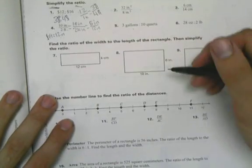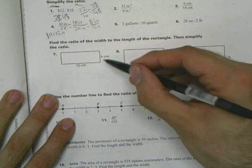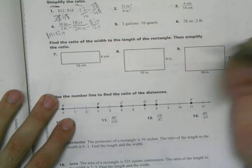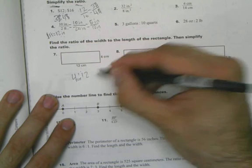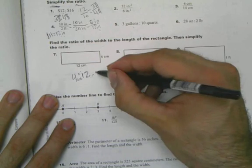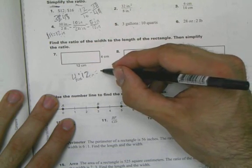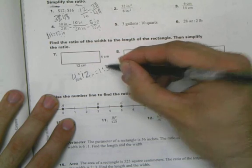Moving on down here. Find the ratio of the width and the length of the rectangle. Well we know this is 4 to 12 or 12 to 4 up to you. But let's do 4 to 12 centimeters. And we can simplify it and say that is the same thing as 1 to 3.